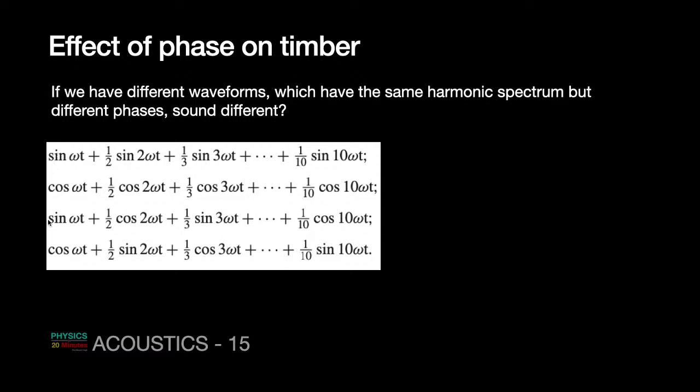sin(ωt) but the double frequency — remember when you shift from sine to cosine, the phase angle changes by 90 degrees, or π/2. So if you add all the sine terms together, the waveform would look somewhat like this. However, if you hear these two sounds — actual practical sounds — they are going to be nearly identical; they are not going to differ much from each other.